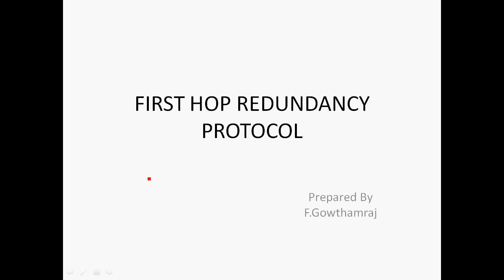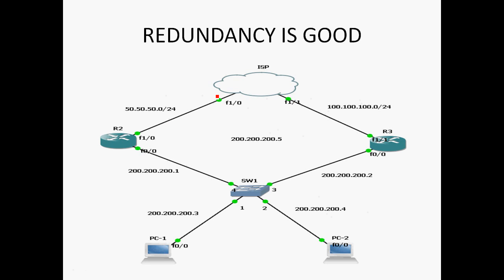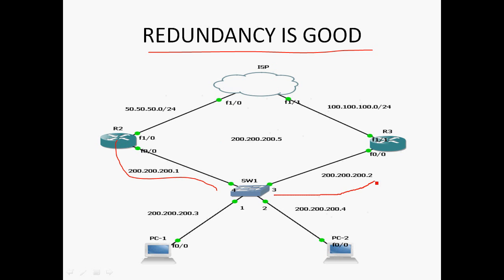It is a Layer 3 redundancy protocol. So this is an example topology. In this topology, there are two default gateways. PC1 and PC2 can reach the ISP through two ways: one is 200.200.200.1 and another is 200.200.200.2.